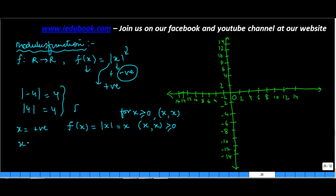So what happens if x is negative? So the coordinate is minus x. Then f(x) will be equal to mod minus x, which again will be x. So in this case the coordinate will be (-x, x).